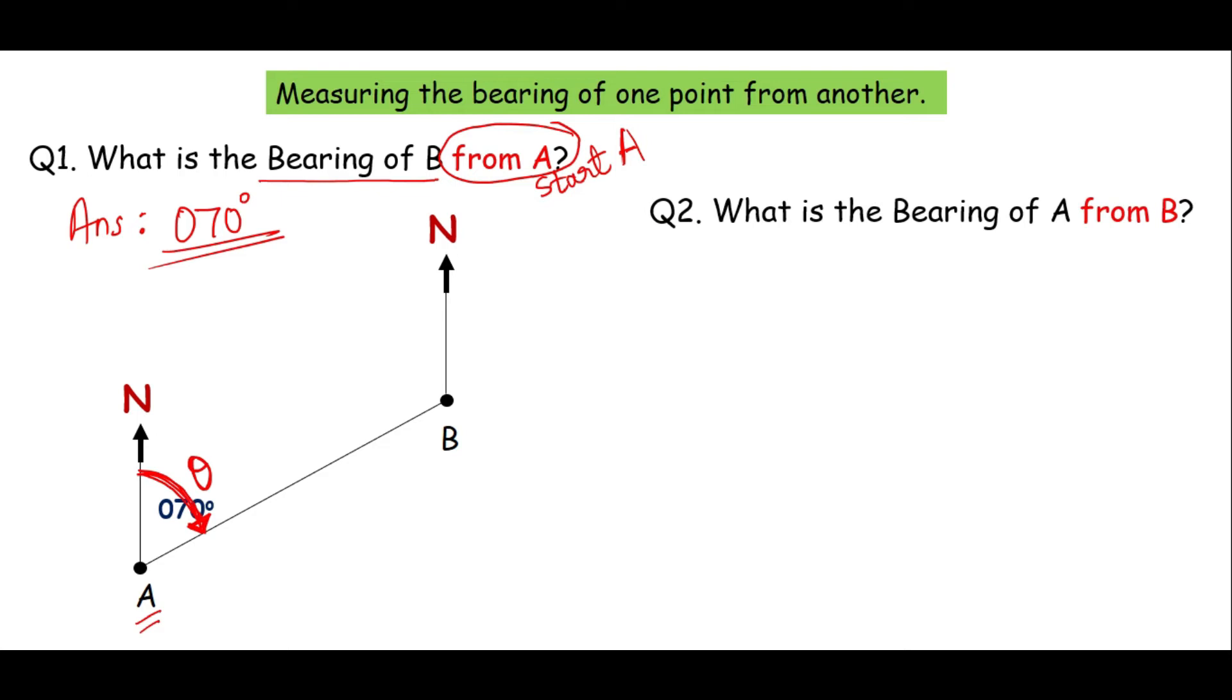Now let me explain what is the bearing of A from B. You have the same two points connected by the line segment AB. You should have the north at each of these points. You draw it and then they are asking you the bearing of A from B. So the second part from B. So you start from where you want. This is B. So you start from the north in the clockwise direction and you stop when you touch the line connecting the points A and B. So this angle should be measured and that gives the bearing.